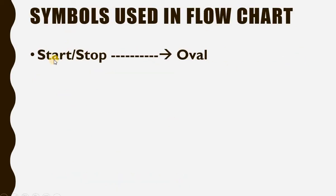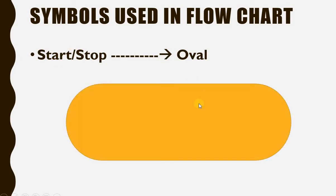Now we will learn the symbols used in a flowchart. First of all, the most important symbol is the oval symbol or oval shape. We use the oval shape to represent the start and stop of the flowchart. We also call it the rounded rectangle.